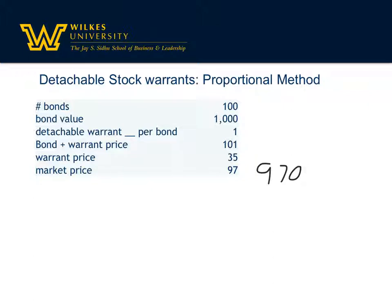If you know the market price of the warrant, you're going to use the proportional method. If you don't and you only know the market price of the bond, you're going to use the incremental method. The with-and-without method says together the bond and the warrant are at 101 — if we know the value of the bond, we're left with the value of the warrant. But with the proportional method, we know the value of both, and if it differs, we've got to do some allocations using a systematic and rational approach.